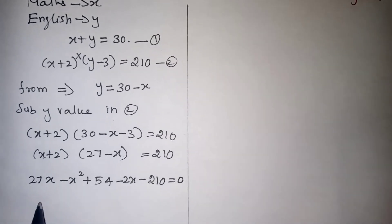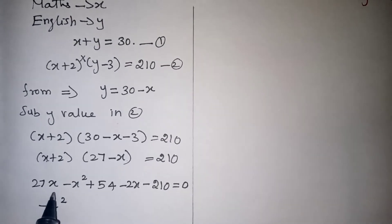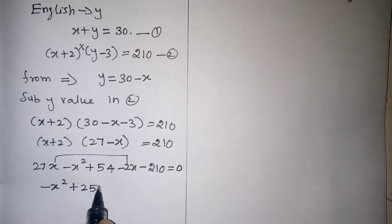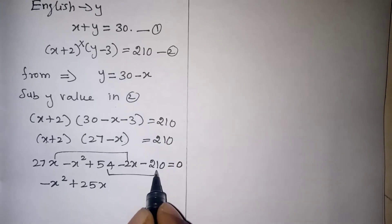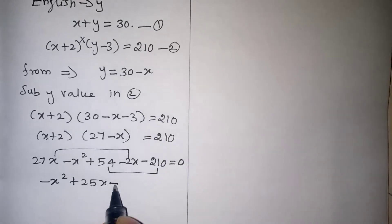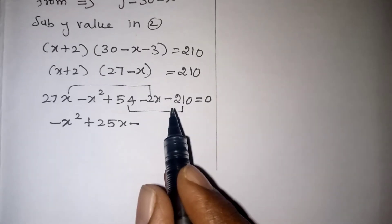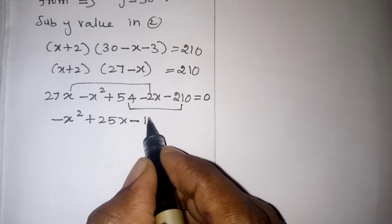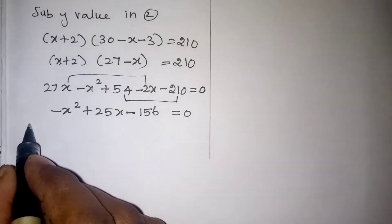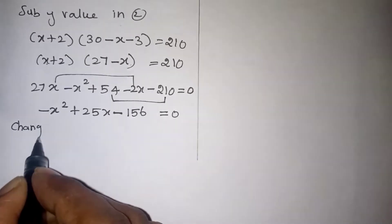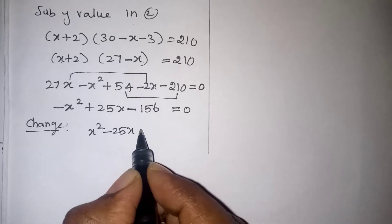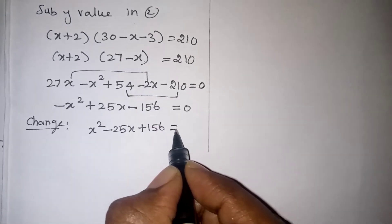We have only one X squared term, so we keep it as is. We have two X terms: 27X minus 2X gives 25X. For the constants, 54 minus 210 gives minus 156. So we have minus X squared plus 25X minus 156 equals 0. Again this is not in standard form because the first term has a minus sign, so we change the sign for everything: X squared minus 25X plus 156 equals 0.